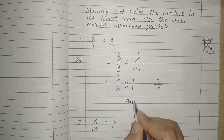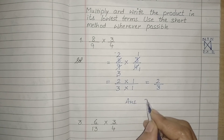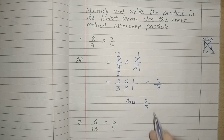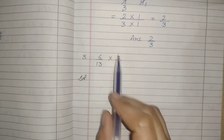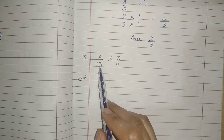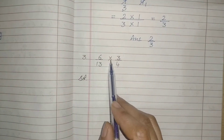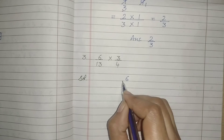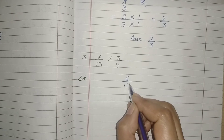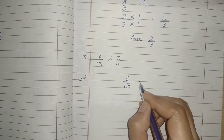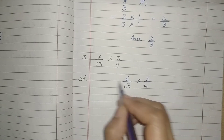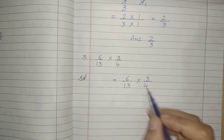I hope it is clear. Let us see the next part. We have the third part: 6 upon 13 multiplied by 3 upon 4. So again the rule is the same, steps are same, we need to follow the steps.